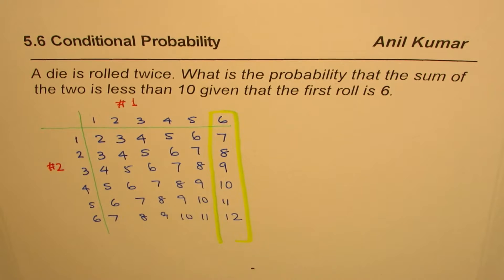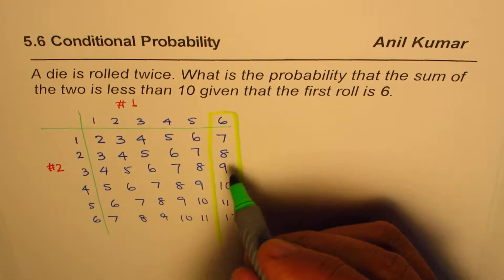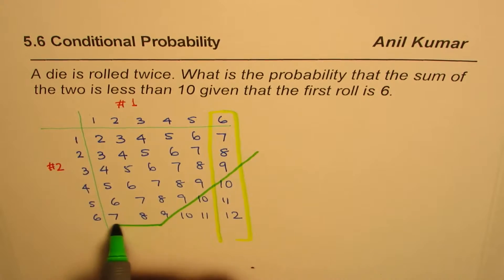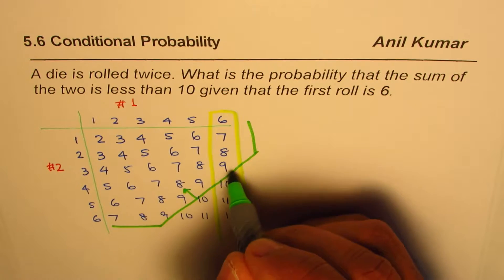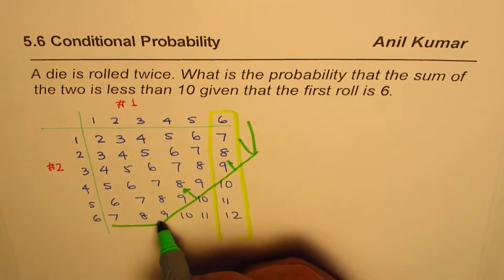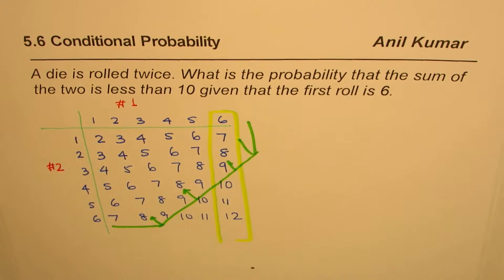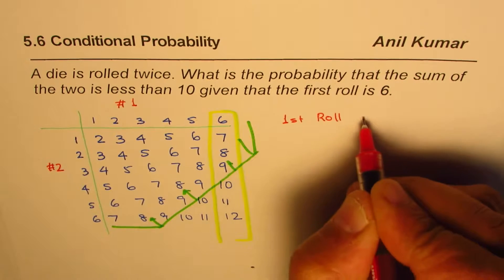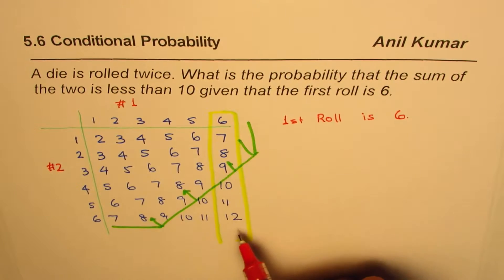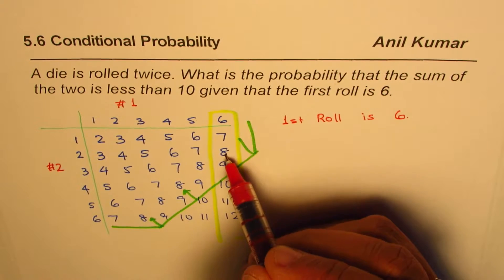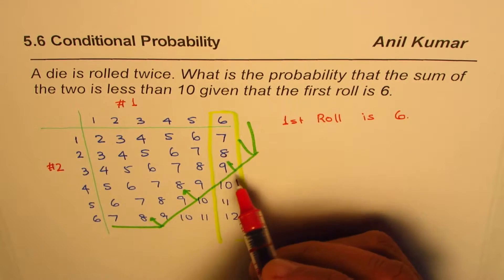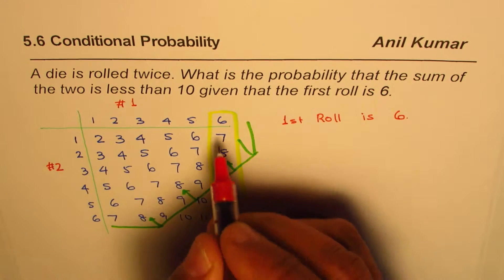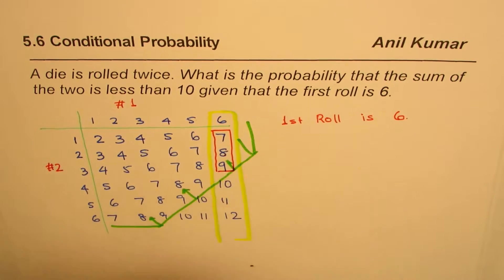What do we need to find? We need to find the probability that the sum is less than 10. Let's see which area has sums less than 10. All the cases on the upper portion of the table have sums less than 10. Now what is important is we are given a condition: the first roll is 6. If the first roll is 6, how many ways can we get a sum less than 10? The second roll could be either 1, 2, or 3 to get a sum less than 10.